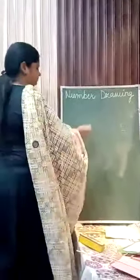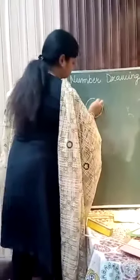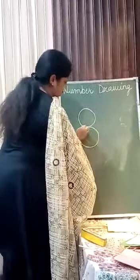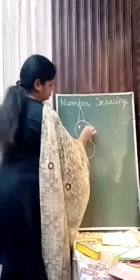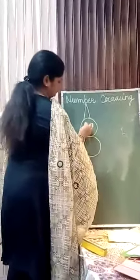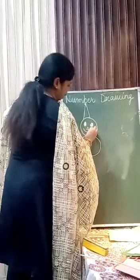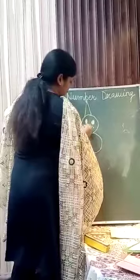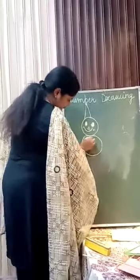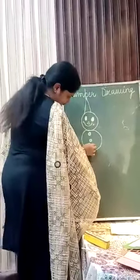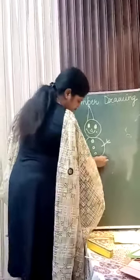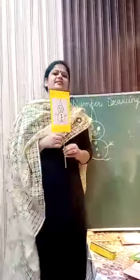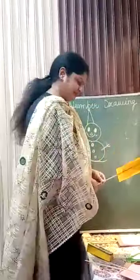8. Here we go for 8. The number 8, with two circles — 1, 2 — this is the snowman.